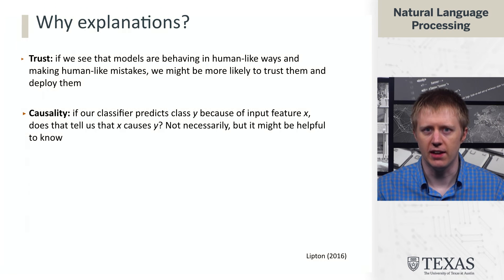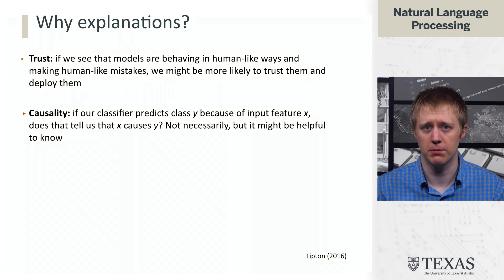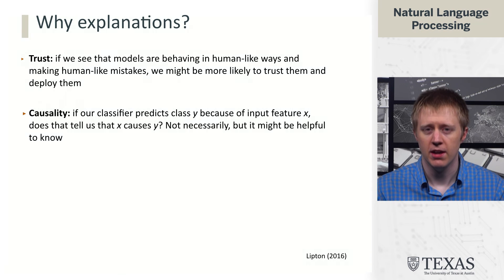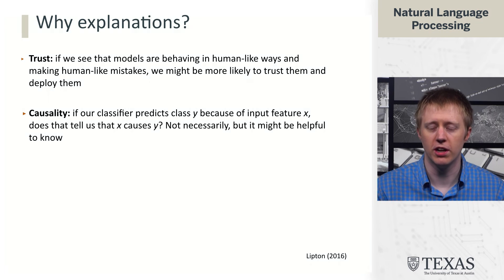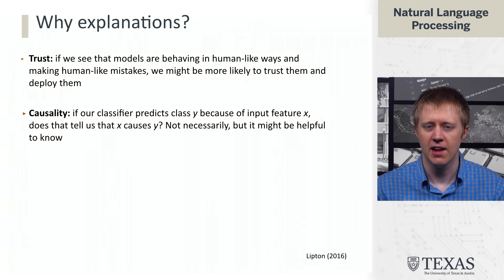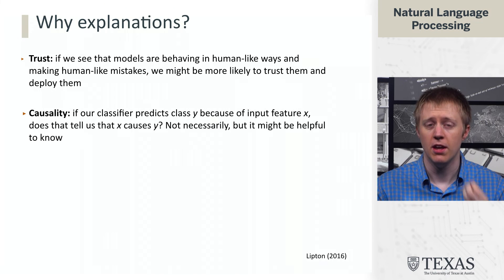Another is a notion of causality. If a model is explaining its prediction — why it predicted positive sentiment — then we have a sense that that explanation should mean something. If you say "I predicted positive because I saw the word good," then if you didn't see the word good, the model would have predicted negative. If you remove the word good and it still predicts positive with the same score because it was using some overfit feature like the number of "the"s in the first sentence, that's not a good explanation — it's not actually telling us what the model is doing. We want this causal relationship between input and output that the explanation reveals.